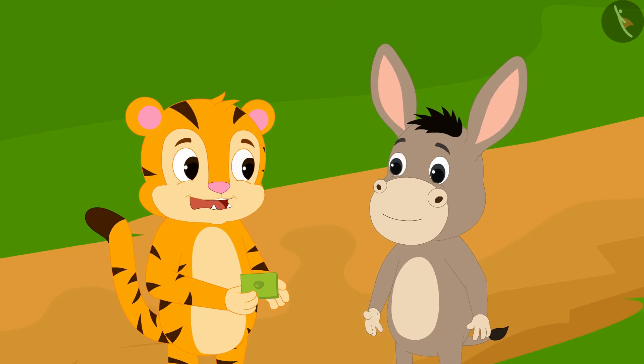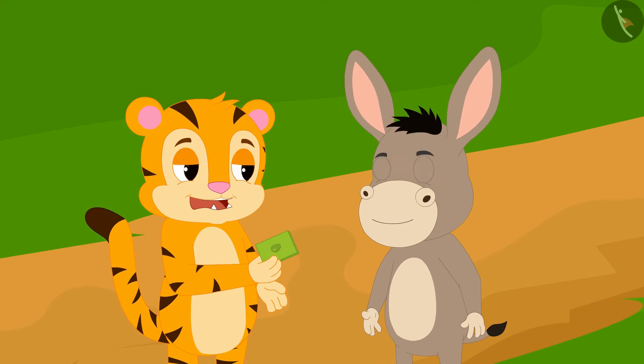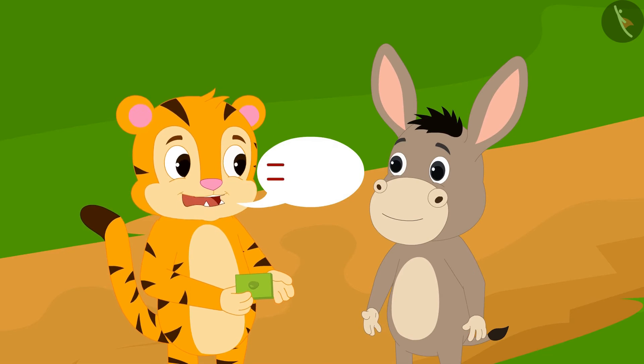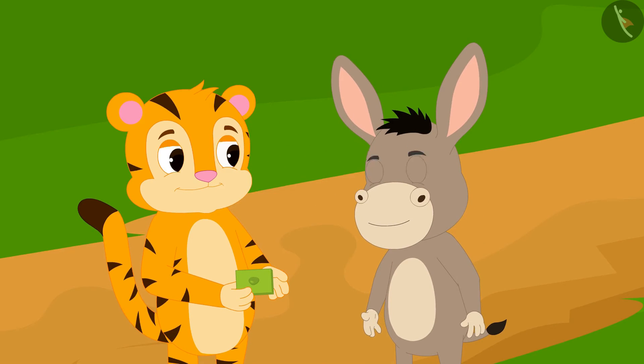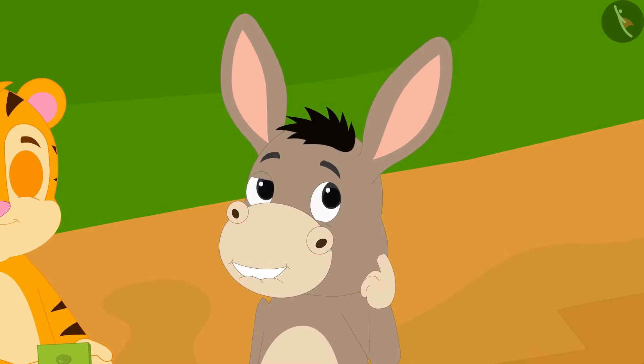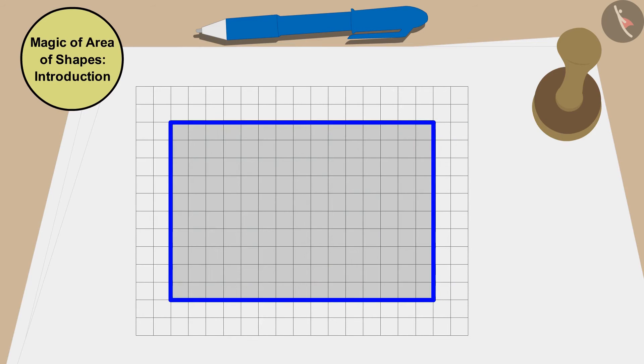Never mind Bholla, you won't be able to answer my second riddle. Can you divide this pistachio barfi into a rectangle and two equal area triangles by drawing two lines? Sher Khan asked Bholla. Bholla started thinking. This question of Sher Khan is a bit difficult.